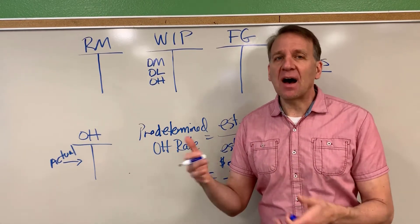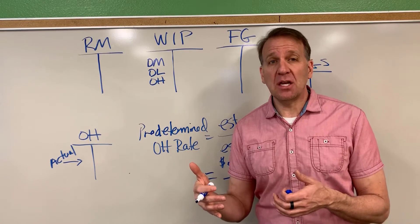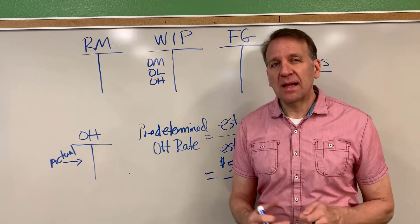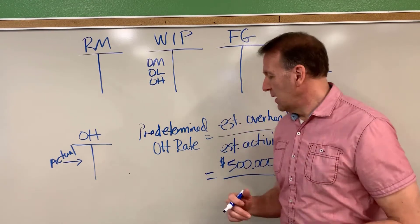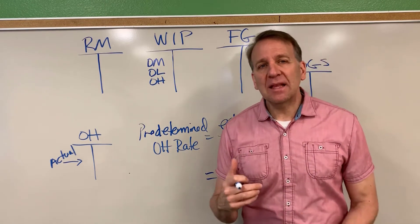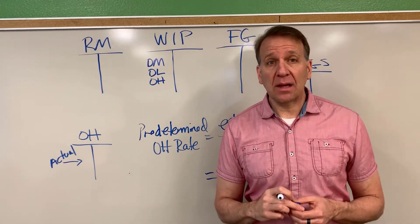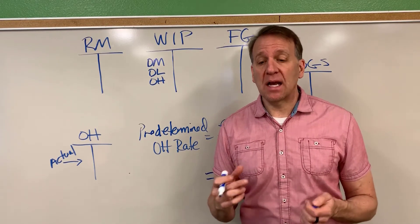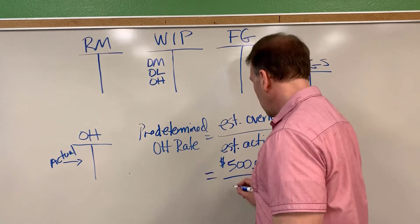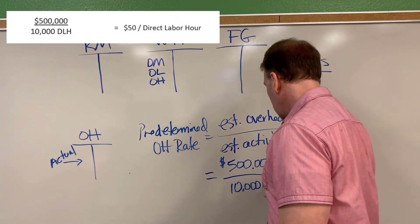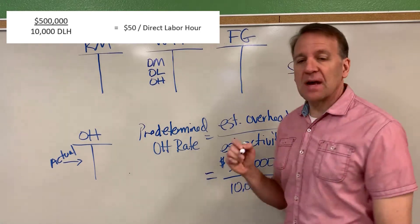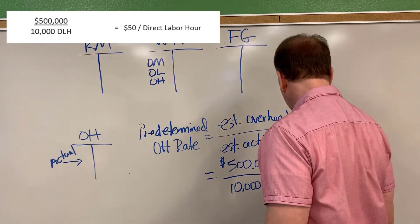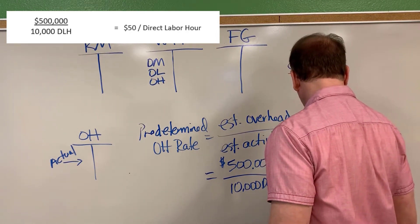We'd probably look at past costs, see if we anticipate any changes, make those updates, and calculate what the estimated cost would be. Then we divide by some sort of activity. We think these overhead costs are being driven by direct labor hours, so we divide by the estimated direct labor hours for that time period — in our example, 10,000 direct labor hours. So we take $500,000 divided by 10,000 and get a rate of $50 per direct labor hour.